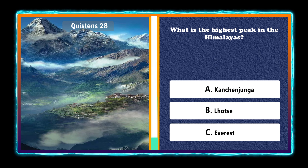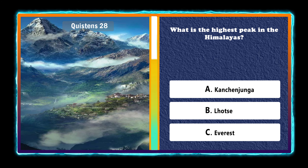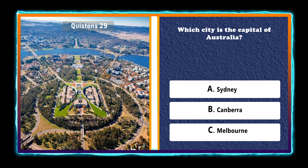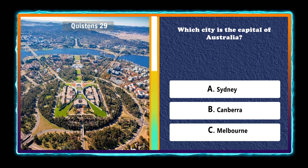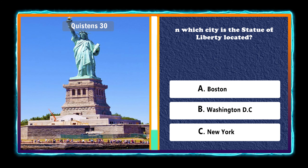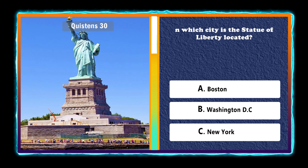What is the highest peak in the Himalayas? Everest. Which city is the capital of Australia? Canberra. In which city is the Statue of Liberty located? New York.